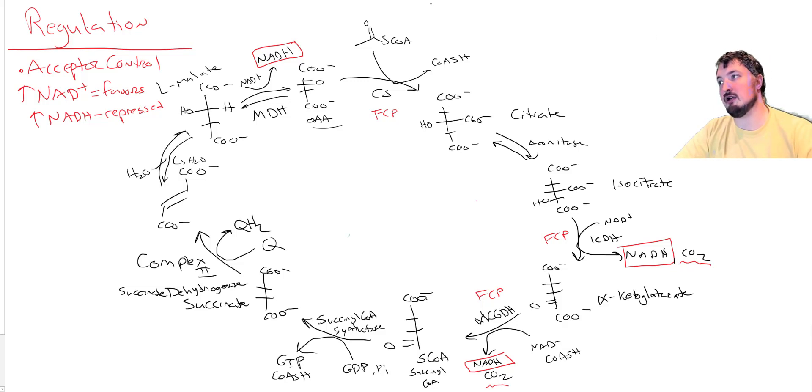We've already talked about control of the pyruvate dehydrogenase complex. We've talked about ATP and acetyl-CoA. ATP, acetyl-CoA, NADH, and fatty acids all repress the pyruvate dehydrogenase complex, whereas AMP, low energy, free-CoA, NAD, and insulin help to favor the pyruvate dehydrogenase complex. That's going to limit how much acetyl-CoA is going to be able to enter the cycle.